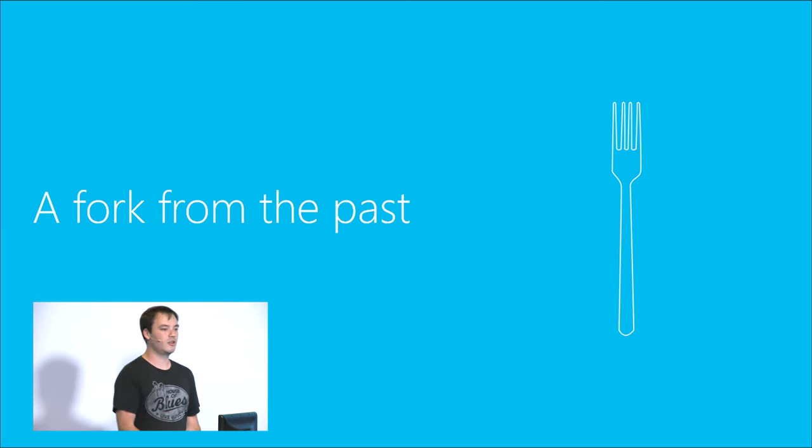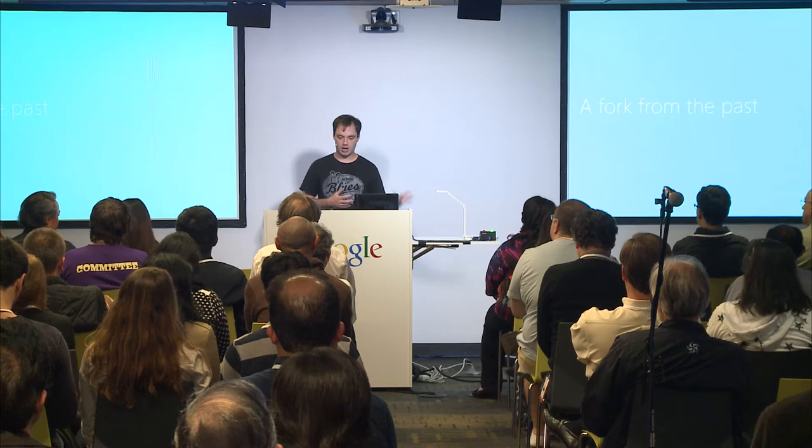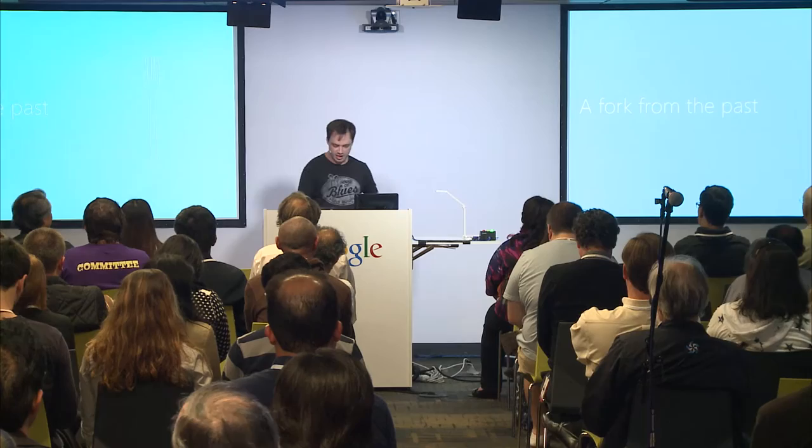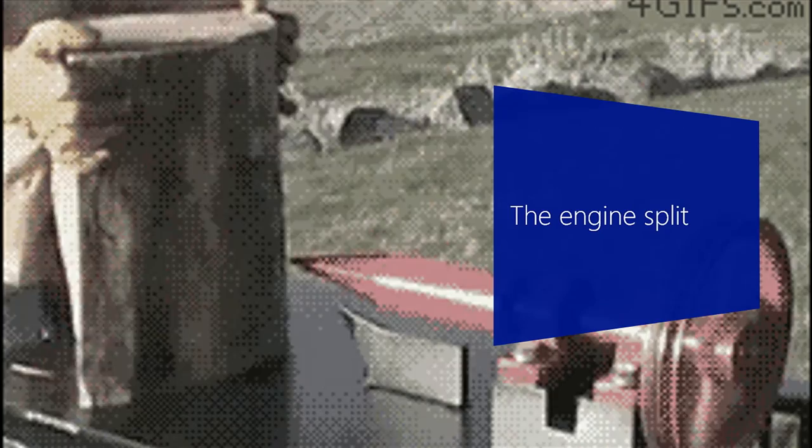It starts with a really lame pun — we forked. This is how we started our new browser. We actually took the rendering engine from Internet Explorer 11 and forked it. We split this engine into two so that we could separate ourselves from the legacy of Internet Explorer and build a modern rendering engine for a new browser that we would eventually come to call Microsoft Edge.